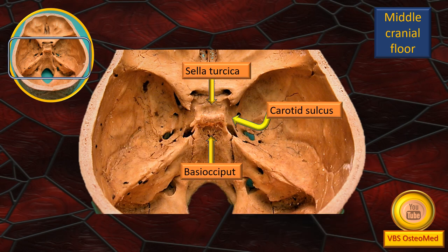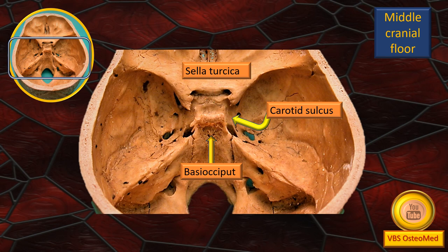Just as we identified the posterior wall of the pituitary fossa and called it the dorsum sellae, likewise the anterior wall is called the sella turcica. On either side of the sella turcica, running longitudinally from behind forwards, is a shallow carotid sulcus which lodges the internal carotid artery. In the midline, there is a solid mass of bone behind the dorsum sellae — that is the basi-occiput, part of the basilar part of the occipital bone. The particular slope seen here is called the clivus.